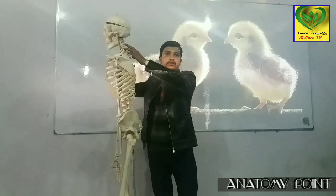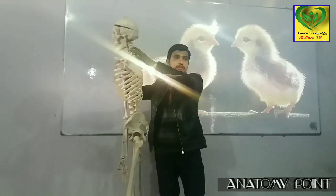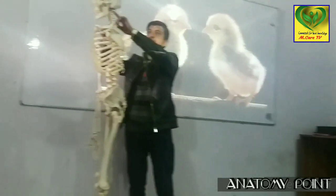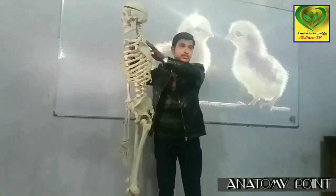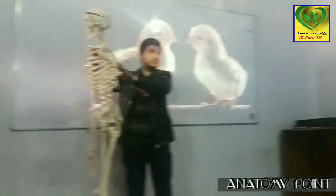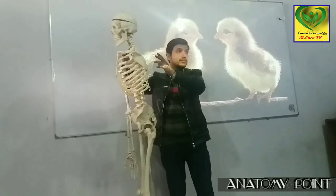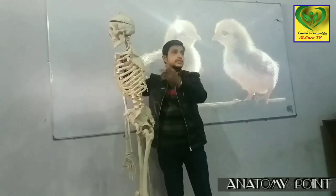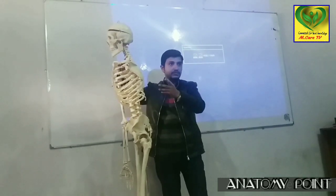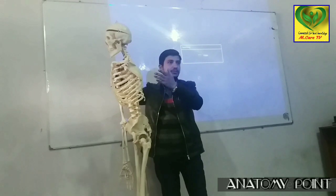The first vertebra which meets the head area is called the atlas vertebra. It forms the atlanto-occipital joint, which provides different sorts of movement like the nodding movement, the head turning movement, and the flexion-extension movement.